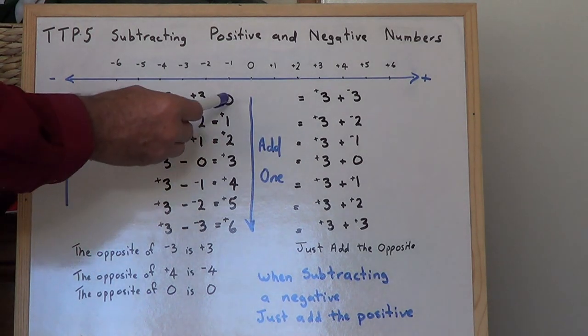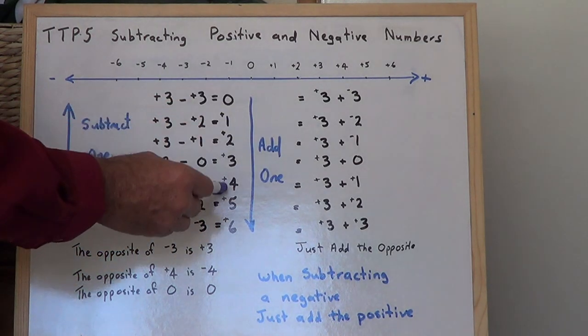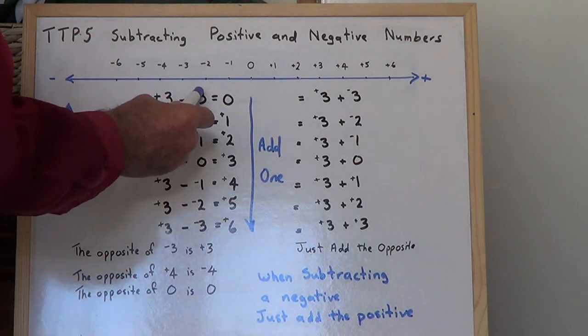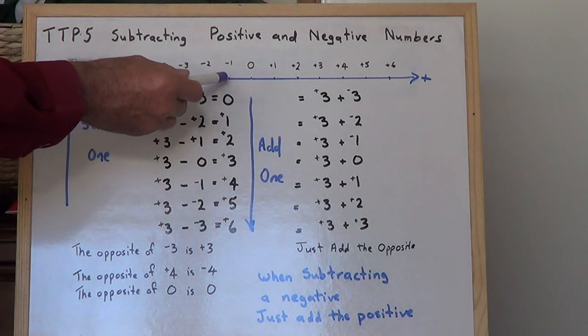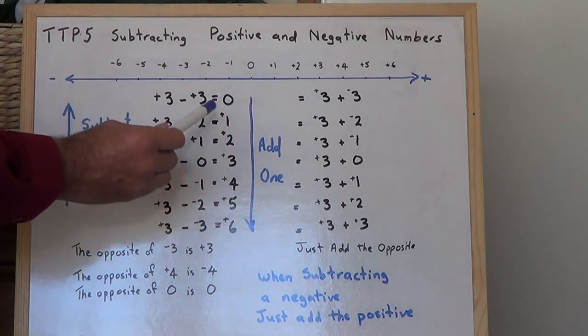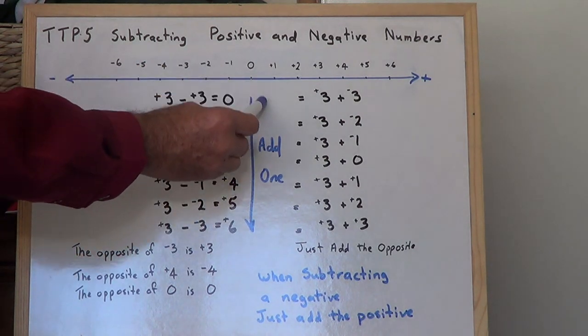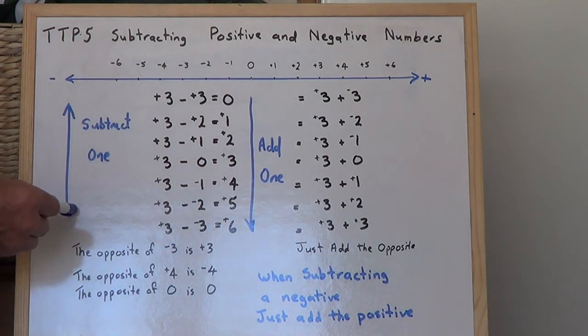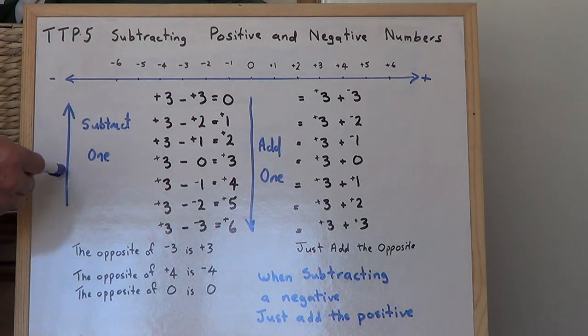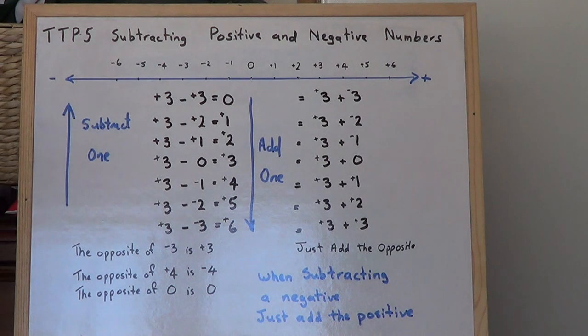As we reduce the amount we subtract, the answer gets bigger. When we come down the list, we add 1. When we go from the bottom up, we subtract 1.